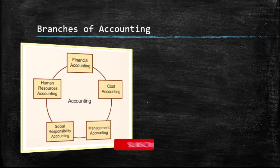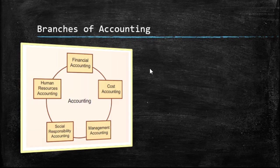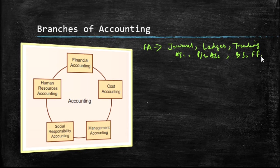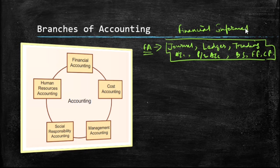Now when we move on, we'll see the various branches of accounting. The first branch is financial accounting. Financial accounting basically refers to the preparation of journal, ledger, trading account, profit and loss account, balance sheet, fund flow statement, and cash flow statement. These are the set of accounts prepared under financial accounting. Essentially, only financial information or financial transactions related to a business enterprise are recorded here.